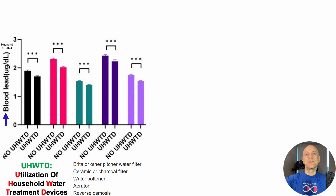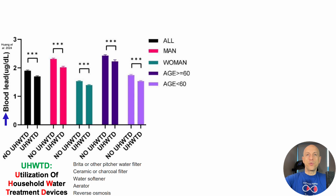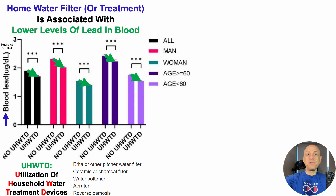So people who reported using these water treatment devices — what were their plasma lead levels? There are five groups: data for all people in black, men in pink or red, women in green, and two age groups — older than 60 and younger than 60 in purple. For each of these groups, including the whole cohort, people who reported using home water filters had significantly lower levels of lead in blood. Now, this is just an association, not causation, but it suggests that using water filters may be one way to help keep plasma lead levels relatively low.